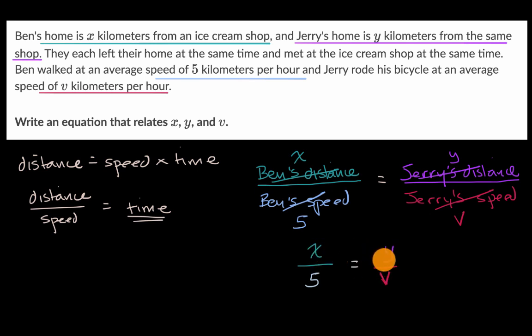So there you have it. We have an equation that relates X, Y, and V, and they gave us the five. Now it's completely possible that instead of the five, they gave us something else, and Ben's speed was a variable.